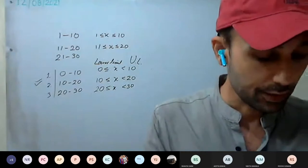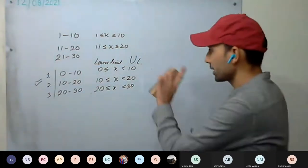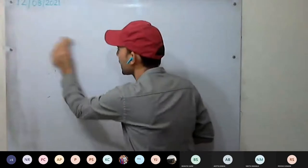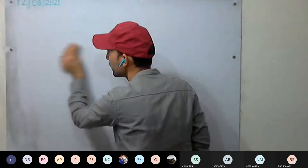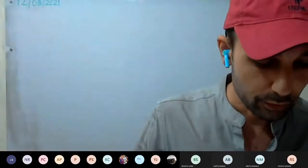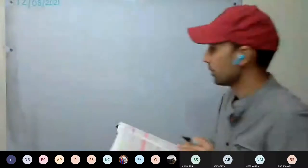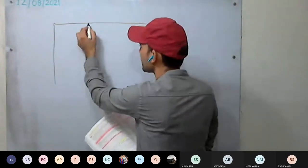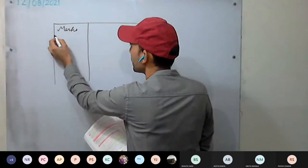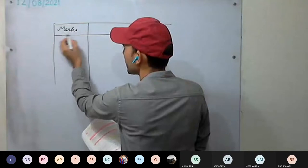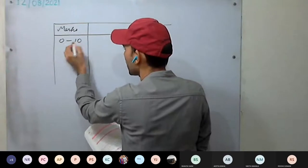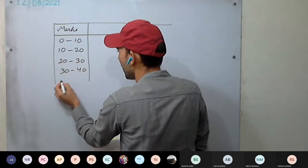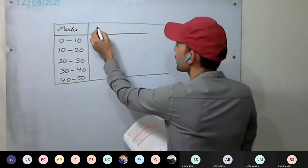Now we are going to make the frequency table for the marks of 24 candidates. This concept is very important — the whole chapter is based on it. Make the table: class interval 0 to 10, 10 to 20, 20 to 30, 30 to 40, 40 to 50.